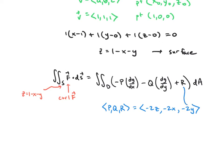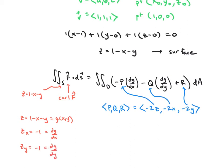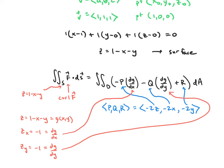Our surface z = 1 - x - y is called g(x,y) in our formula. So the partial derivative of z with respect to x is -1 — that's ∂g/∂x — and the partial of z with respect to y is also -1, that's ∂g/∂y. Those values plug into our formula right here. So we have all our components identified.